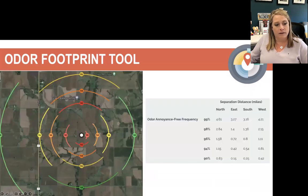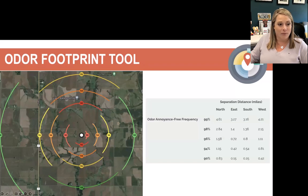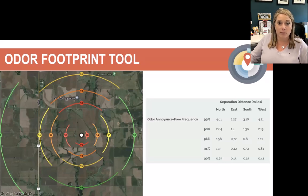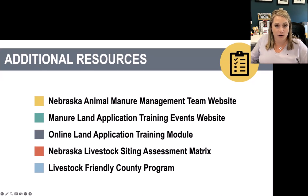A lot of the value in putting it in this format is providing a very visual depiction of the results and what they mean. We have pop-ups that explain what 'odor annoyance-free frequency' means, and the different lines on the map, making it more understandable to anyone who wants to use the tool. There are also additional resources on the site, from land application training events and online training modules to information about the Livestock Friendly County program in the state.